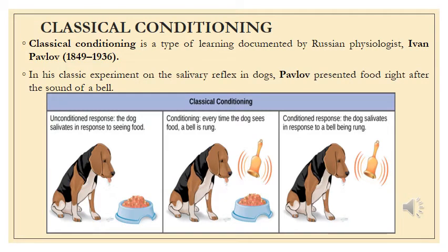Classical conditioning is a type of old conditioning method which is very prevalent in behavioral sciences or behavioral ecology. It is a type of learning documented by Russian psychologist Ivan Pavlov. In his classical experiment on the salivary reflexes in the dog, Pavlov presented food right after the sound of a bell, associating both stimuli to elicit a strong response, which laid the foundation for his famous theory of classical conditioning.